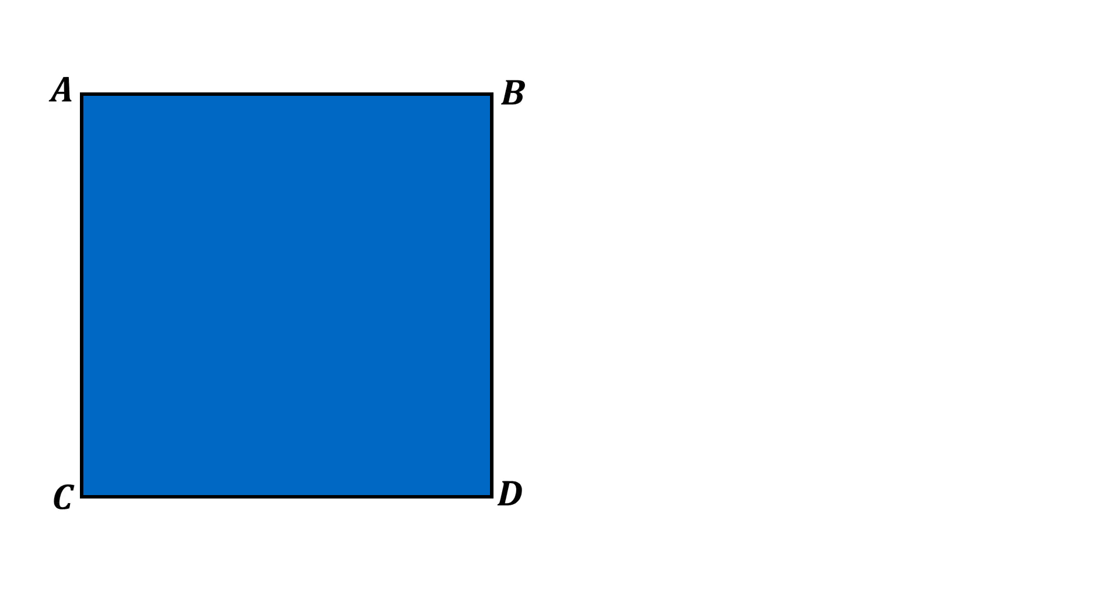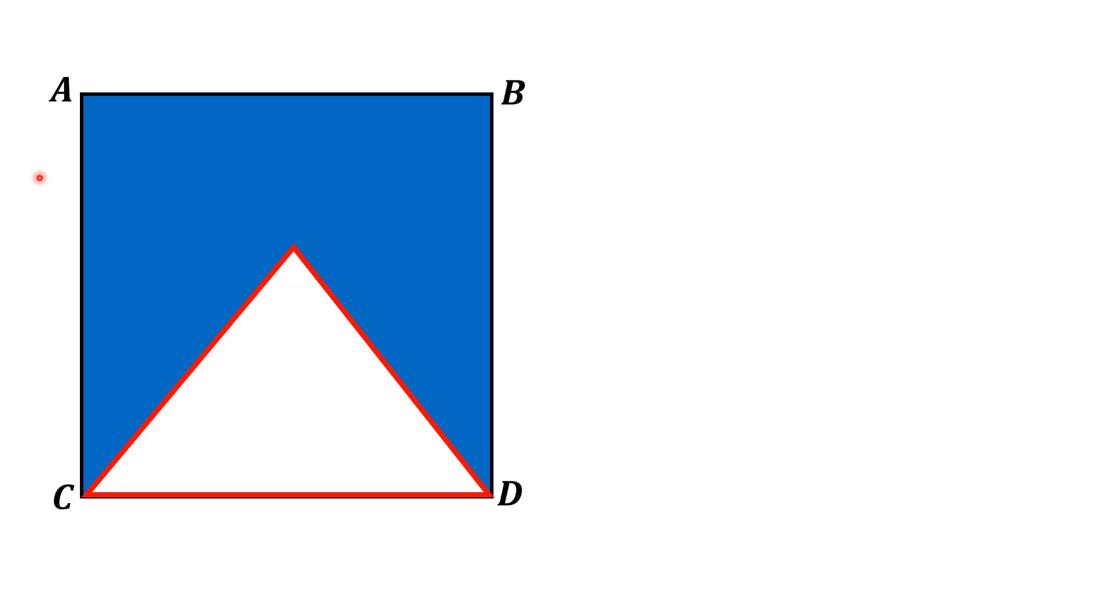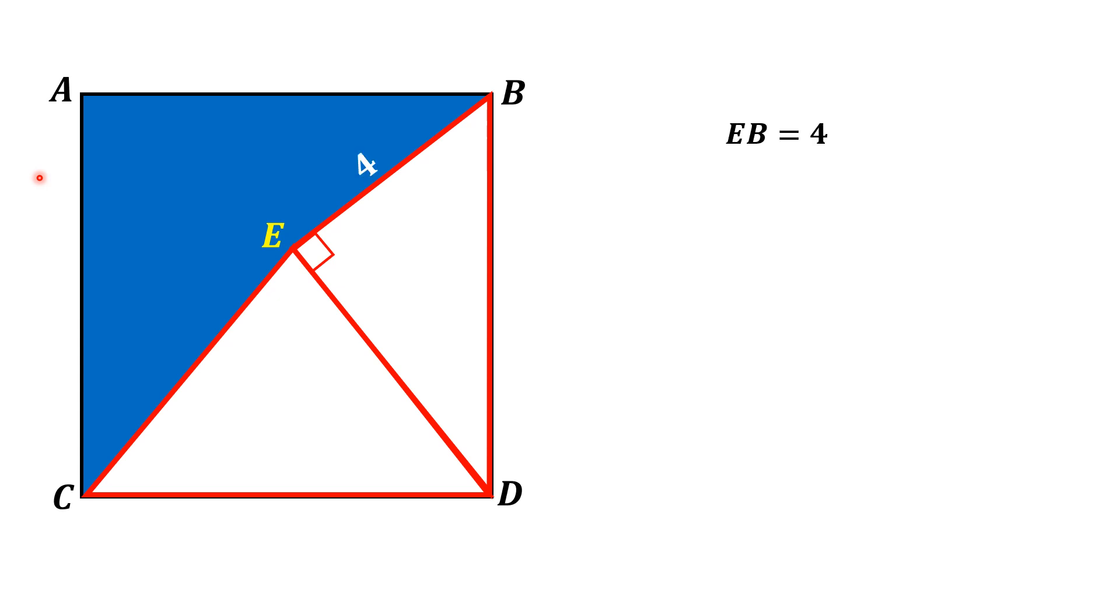Hello everyone, in this video given is a square ABCD in which two triangles CDE and a right triangle BED are inscribed. The angle BED is 90 degrees. Moreover, the length EB is 4 units and the length ED is 8 units. By this given data, we have to find the area of the blue region.